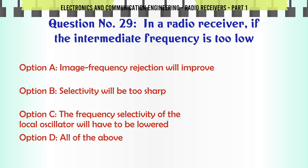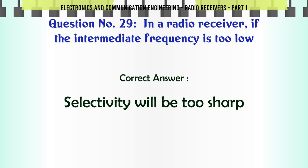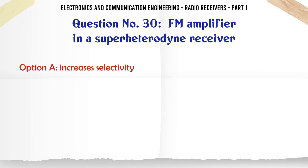In a radio receiver, if the intermediate frequency is too low: A. Image frequency rejection will improve. B. Selectivity will be too sharp. C. The frequency selectivity of the local oscillator will have to be lowered. D. All of the above. The correct answer is selectivity will be too sharp.